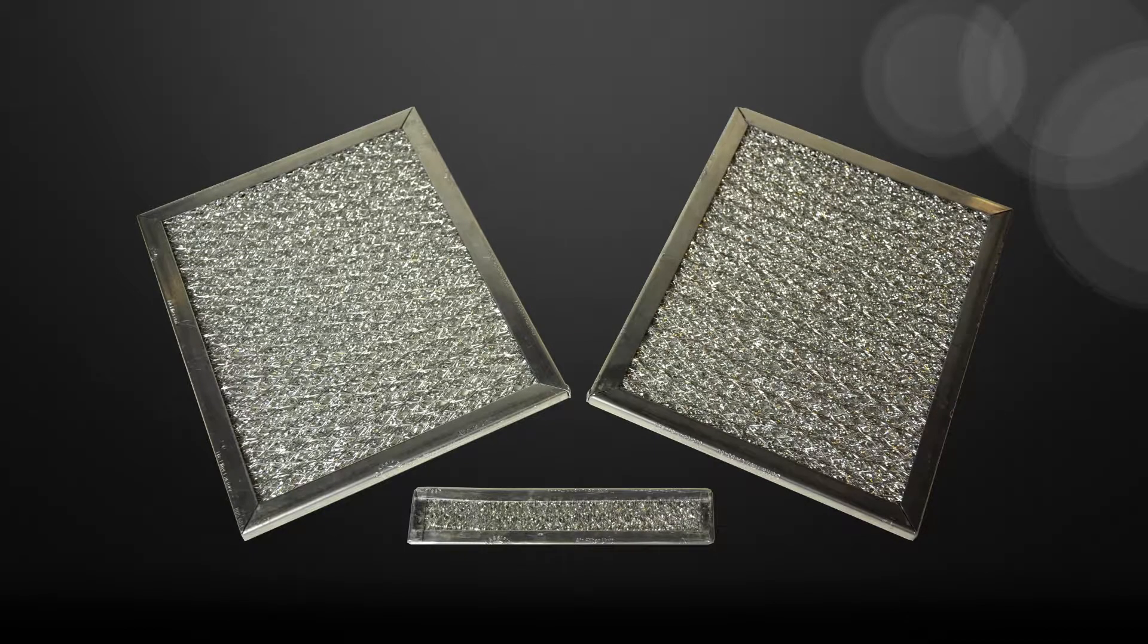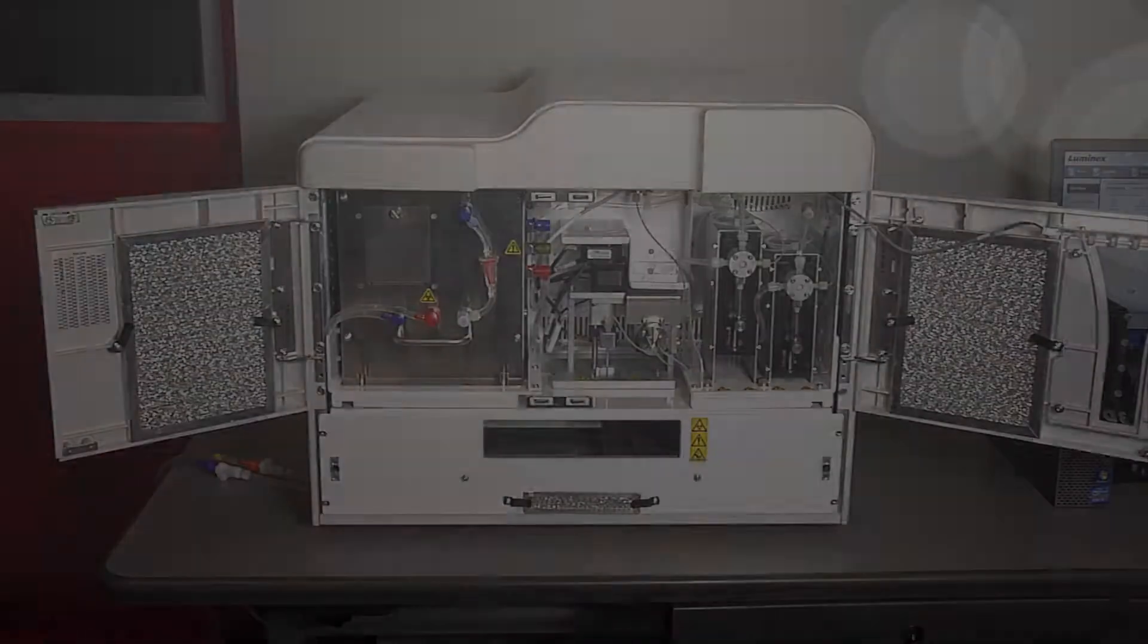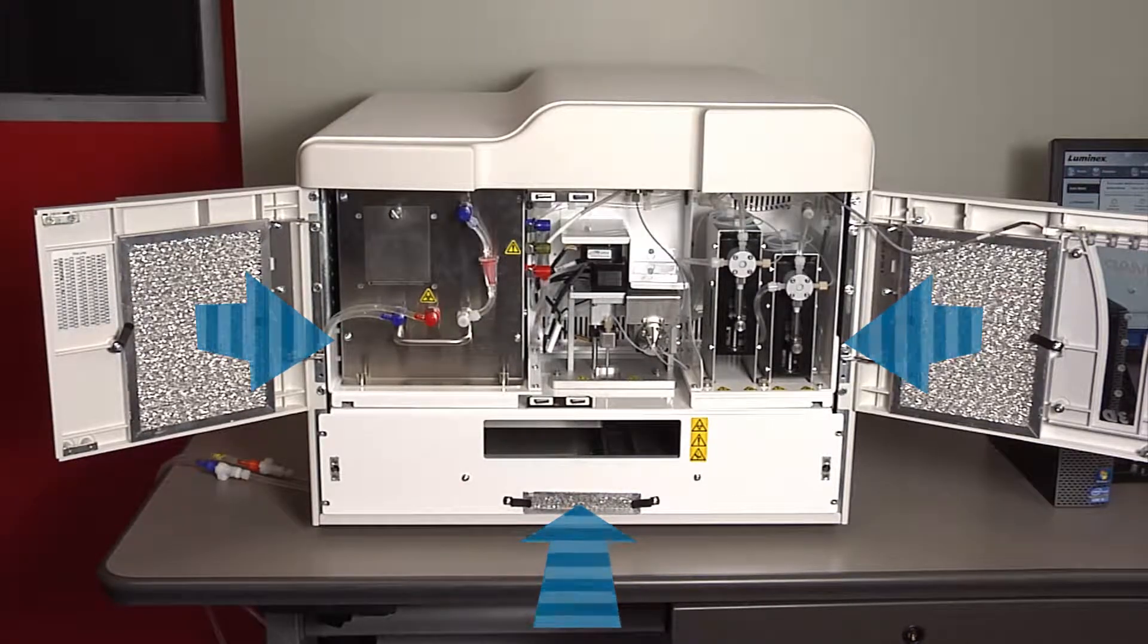Here's how to clean the air ventilation filters on the FlexMap 3D. Each filter has at least one imprinted arrow on its metal frame. This arrow indicates the direction of the air flow. Filters should be installed so that the arrows are in the correct locations and point in the correct direction.